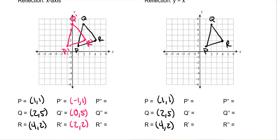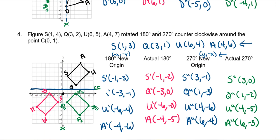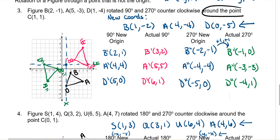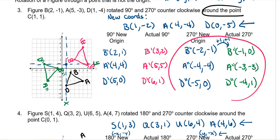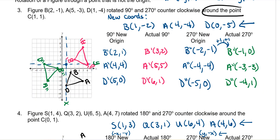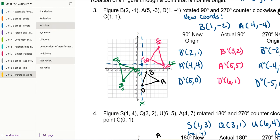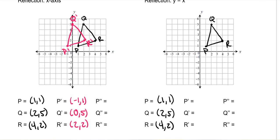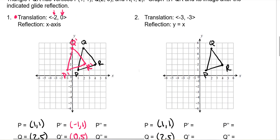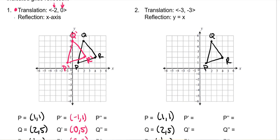One prime means you moved your original image once; two primes means you moved it twice, which is what we're doing here. On compositions of transformations, double primes is correct because it means the original has been transformed twice. This is why double primes would have been improper on rotation day — it implies a prior transformation that didn't exist there. Now we need to reflect across the x-axis.